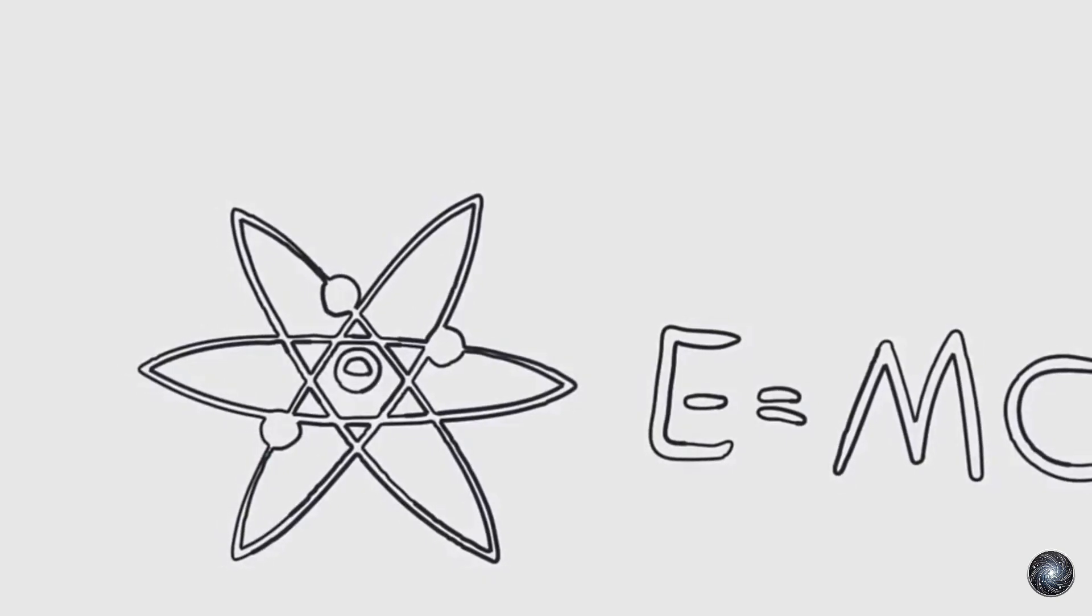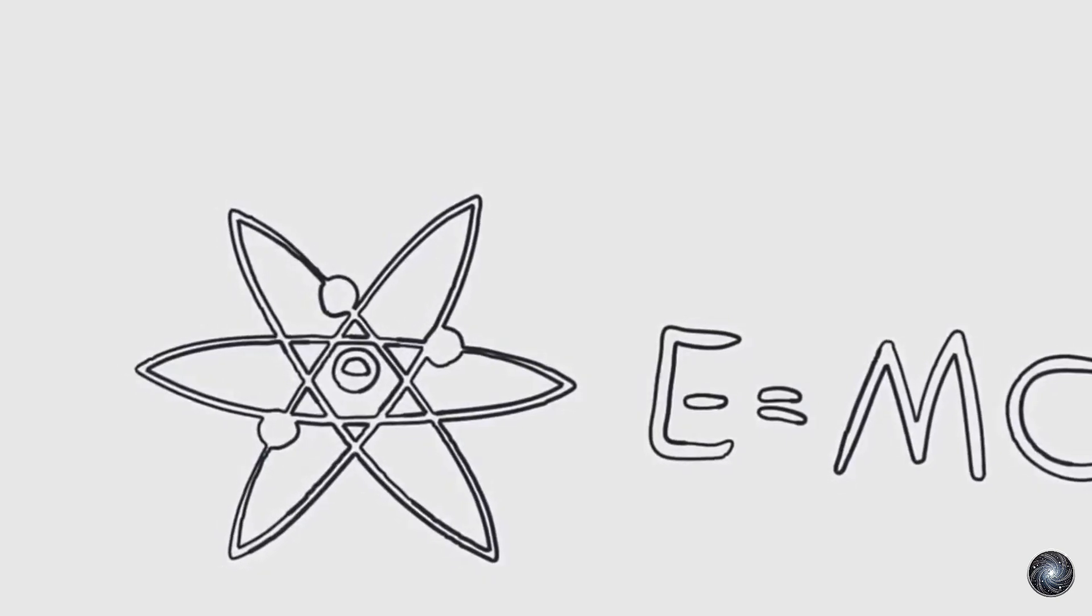Einstein's theory also showed that mass and energy are equivalent, encapsulated in the famous equation E equals mc squared. This equation revealed that a small amount of mass could be converted into a tremendous amount of energy, a principle that underlies nuclear power and atomic bombs.